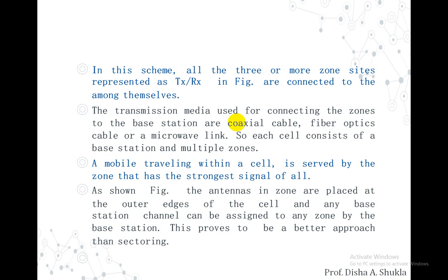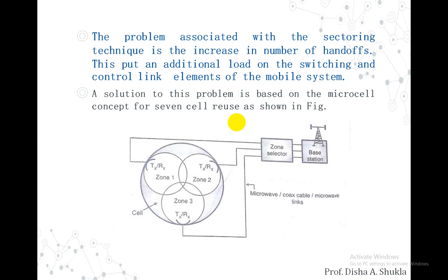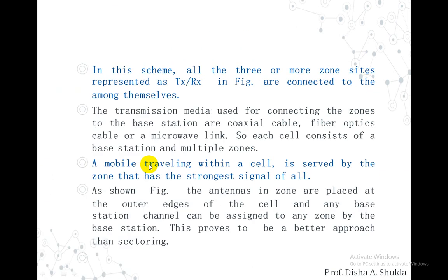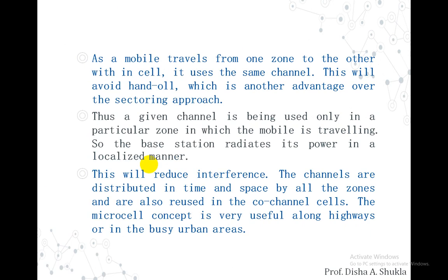This proves to be a better approach than sectoring. Each antenna is placed at the edge of a particular zone, and any base station channel can be assigned to any zone. As a mobile travels from one zone to another within a cell, it uses the same channel — this avoids handoff, which is another advantage over sectoring. The base station radiates its power in a localized manner, reducing interference.